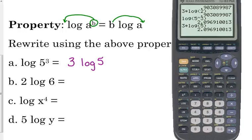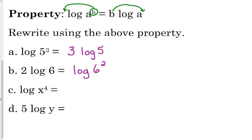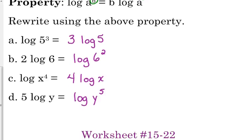2 log of 6, we can write that as log of 6 squared as well. That coefficient can become an exponent. We can do it with variables. They don't have to be numbers. So log of x to the 4th is equal to 4 log of x. And 5 log of y is equal to log of y to the 5th. So I want you to practice with that property, 15 through 20.